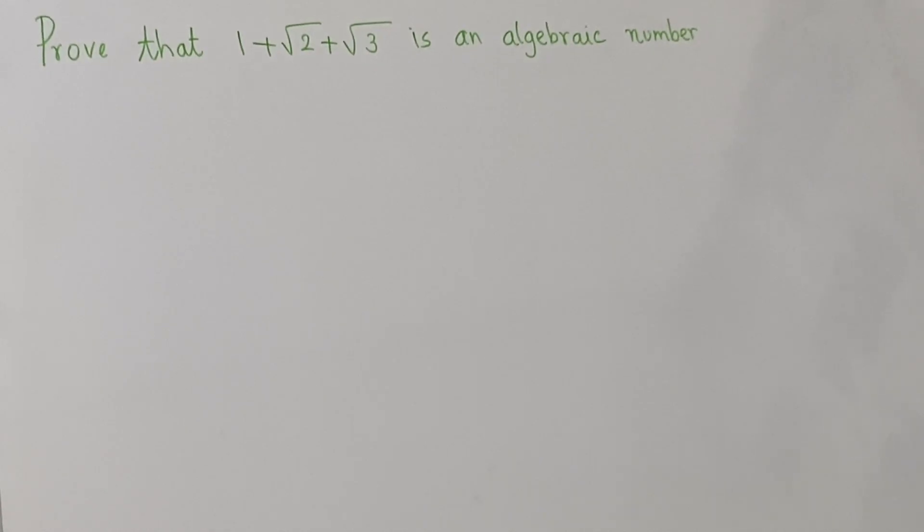So let us try this. Let x be equal to 1 plus root 2 plus root 3. Then x minus 1 is equal to root 2 plus root 3, and if we square that we get x minus 1 whole square is equal to root 2 plus root 3 whole square, which is 2 plus 3 plus 2 root 2 root 3, which is 5 plus 2 root 6.